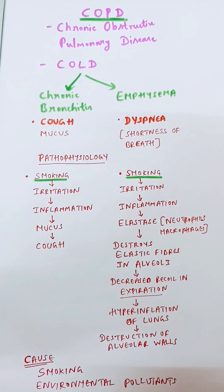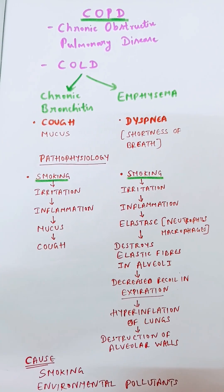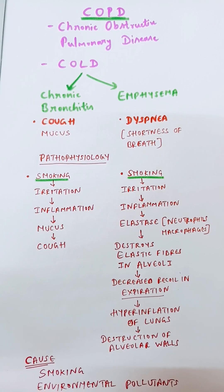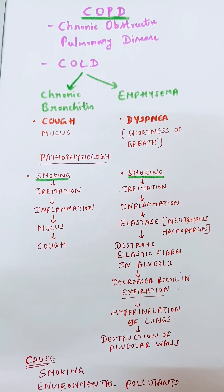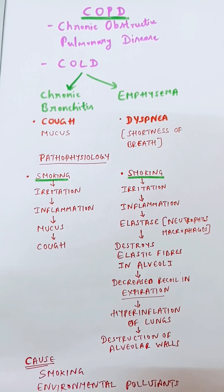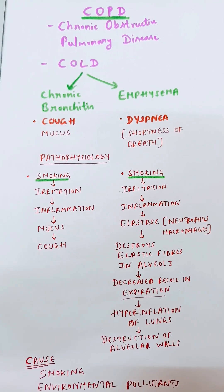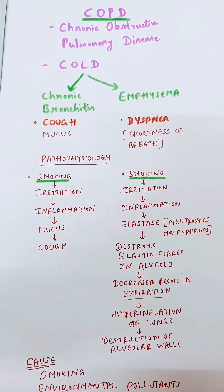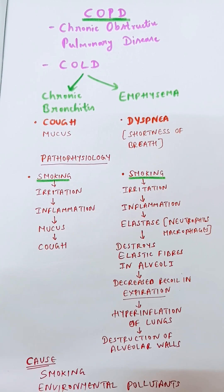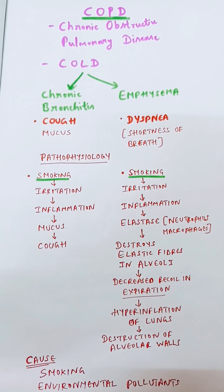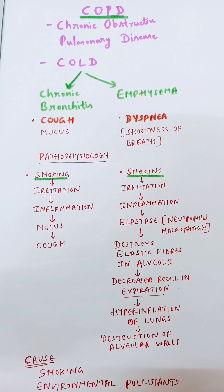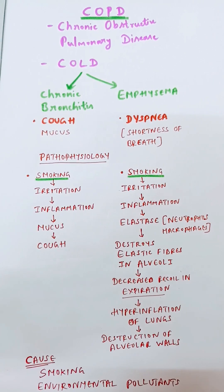COPD, chronic obstructive pulmonary disease, is a progressive respiratory condition in which there is chronic inflammation of the airways and irreversible airflow limitation. The two main conditions that form COPD are chronic bronchitis and emphysema.